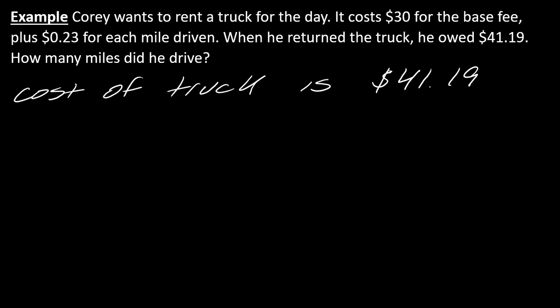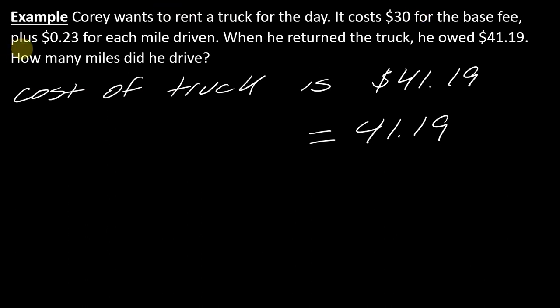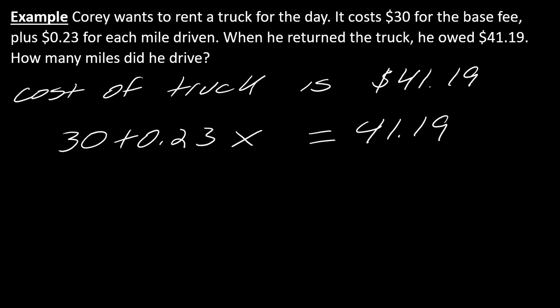I've already figured out the second half of this equation — now I just have to figure out how to represent the cost of the truck. It's $30 for the base fee, plus — which is addition — $0.23 for each mile driven. That's $0.23 per mile. We don't know how many miles he drove, so that's going to end up being 30 plus 0.23x. So the equation is set up like this, and now we can solve as usual.